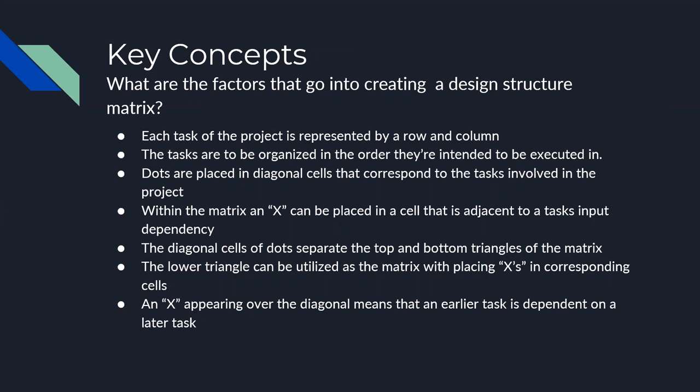What are the factors that go into creating a Design Structure Matrix? Each task of the project is represented by a row and a column. The tasks are to be organized in the order that they're intended to be executed in, and that's subject to change. Dots or gray boxes are placed in diagonal cells that correspond to the tasks involved in the project. Within the matrix, an X can be placed in a cell that is adjacent to a task's input dependency, meaning next to a cell to the right of a cell that's dependent on the task above it.